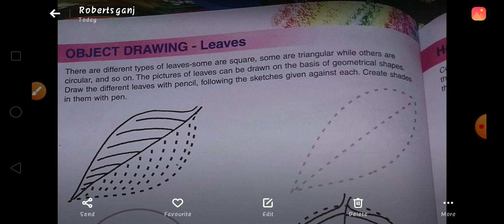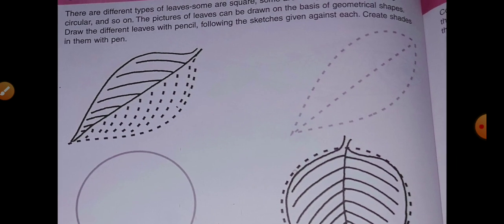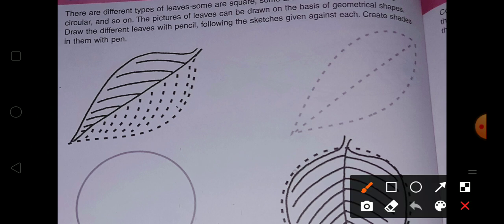So we have to draw the leaf with the help of sketch and a pen. First you have to do with sketch, and then you have to create shade with pen. You can see here what it is. You can see the leaves.